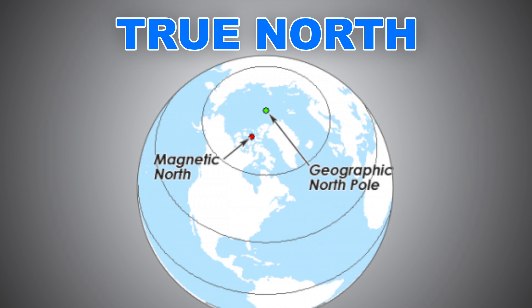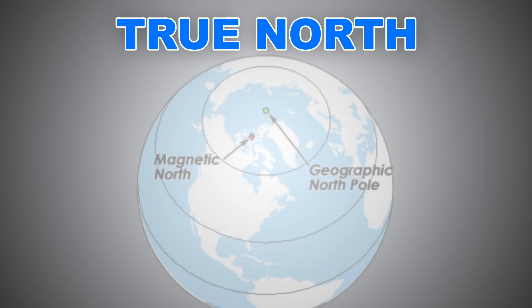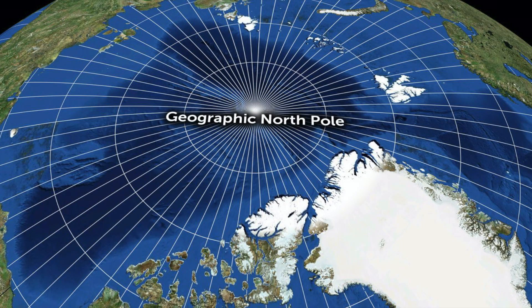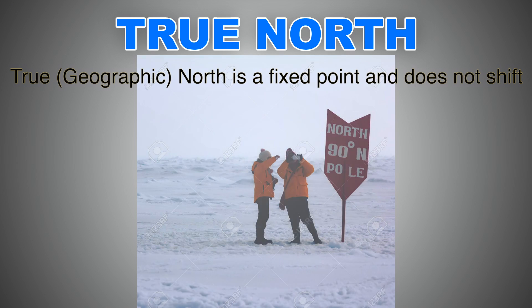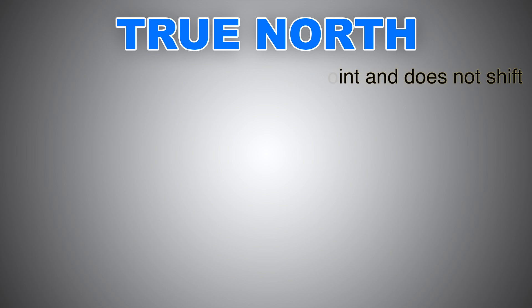Let's look at the simple one first: true north. True north is the direction that points directly towards the geographic north pole. This is a fixed point on the earth's globe. In other words, true north is where all longitudes meet or converge at the earth's north pole. If you align yourself with any meridian while facing north, you are directly facing true north. Note that true north is a fixed geographical point and does not move, unlike magnetic north.